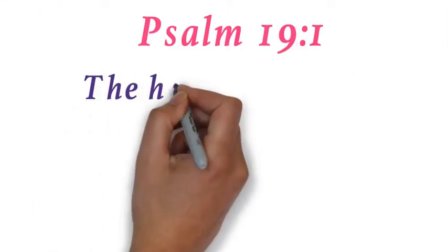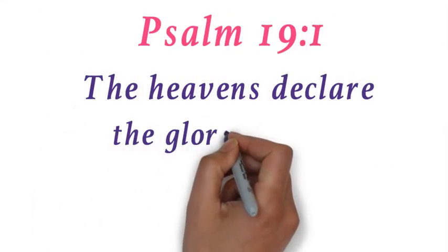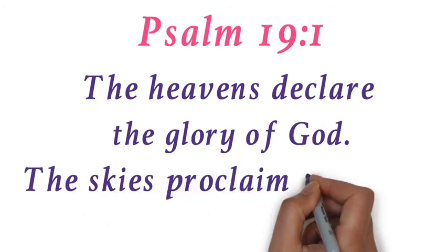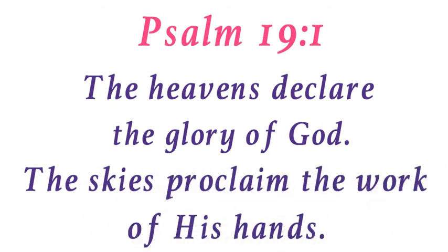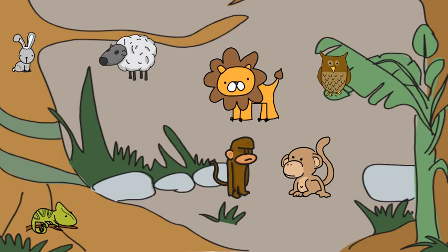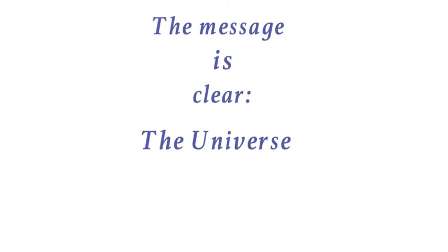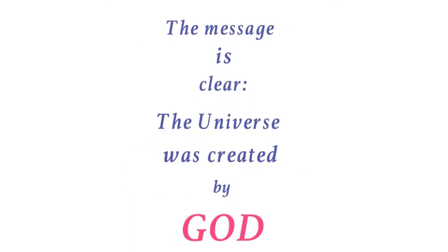Psalm 19 tells us that the sky itself reveals God's glory. Creation itself is sufficient enough evidence to show us that there is a creator. And even if the sky can't speak for itself, and the oceans are unable to shout, and the land of the earth cannot cry out, the message is still loud and clear. The universe was created by God. God is real.